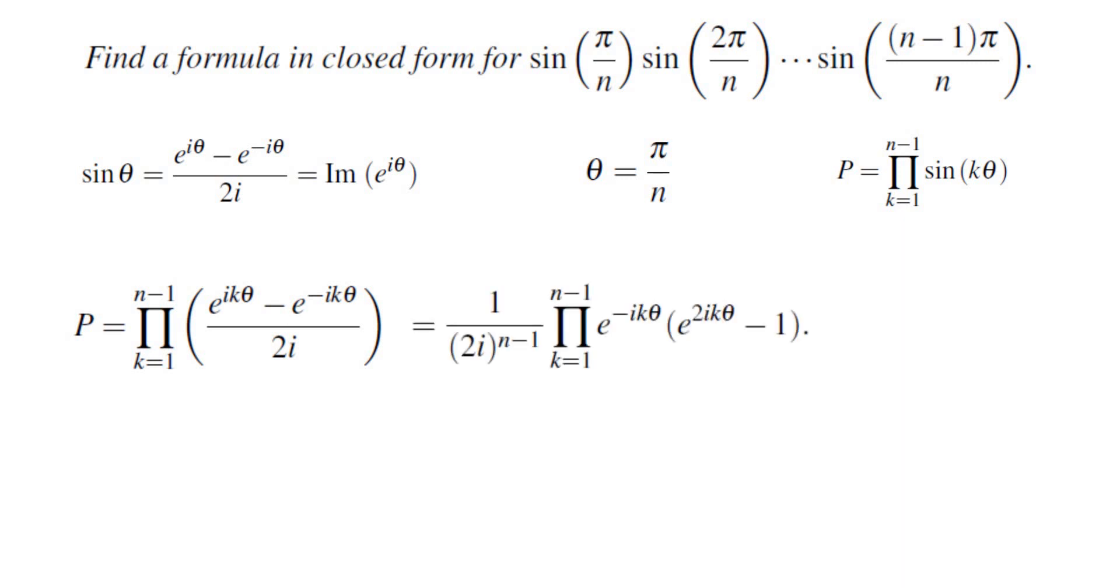There are n-1 terms, all of them have a 2i at the bottom, so that would give us (2i)^(n-1). Each term inside the product factors e^(-ikθ), so that would give me this product. Now, I would like to get rid of i and e^(-ikθ) if I can.